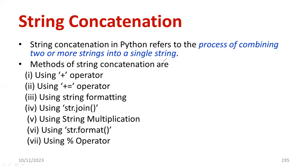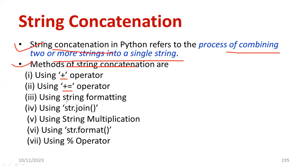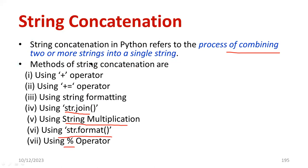Now we can do different operations on a string. Using the string, we can do concatenation. Concatenation is the process of combining two or more strings into a single string. Sometimes we need to combine strings — that is the application. You can perform string concatenation using the following methods: the plus operator, the plus-equal-to operator, string formatting, the str.join function, str.format, and the percentage operator. These are the different methods of string concatenation.